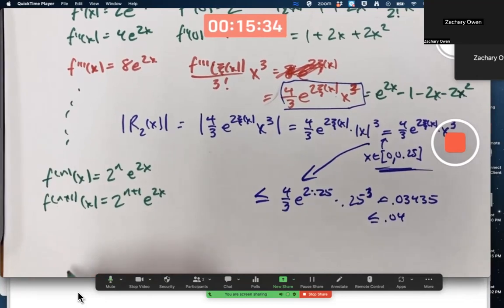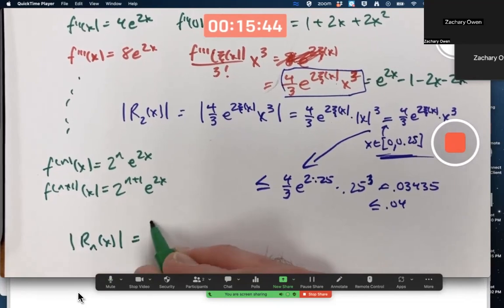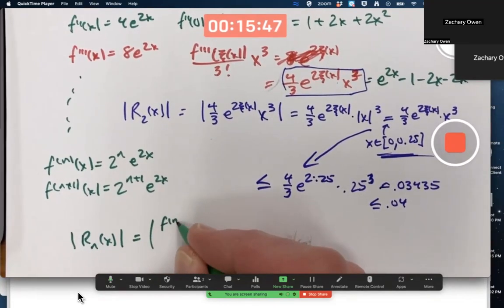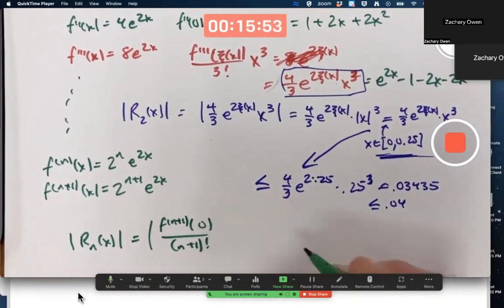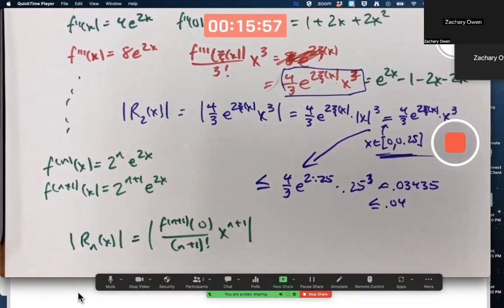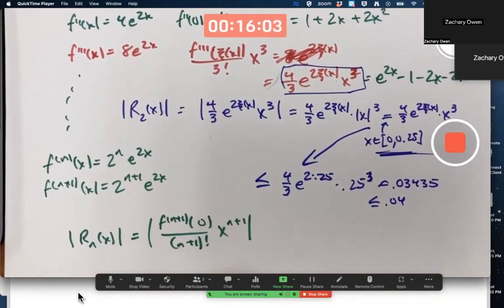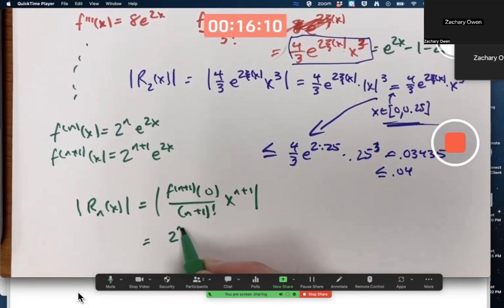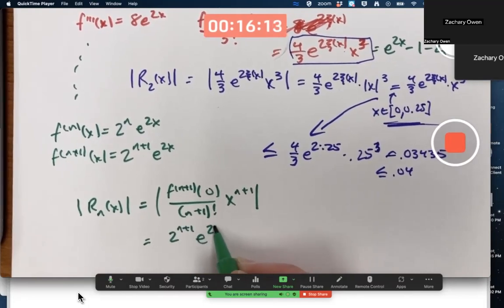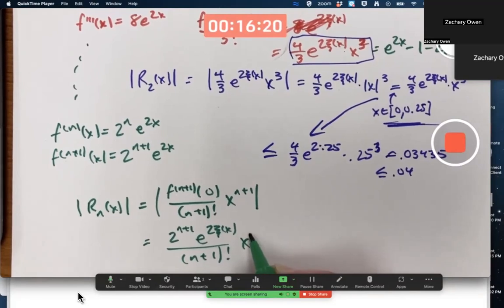What would the bound on the nth degree Taylor approximation imply in this context? What is the absolute value of the remainder? Well, it's going to be the absolute value of the n plus first derivative evaluated at x0, which is 0, divided by n plus 1 factorial times x to the n plus 1. In our example that we just did, n was 2, and so that's why I had a 3 factorial and an x cubed here before. This is going to be, if x is still positive, I can get rid of all the absolute value signs. 2 to the n plus 1, e to the 2 times xi of x over n plus 1 factorial times x to the n plus 1.